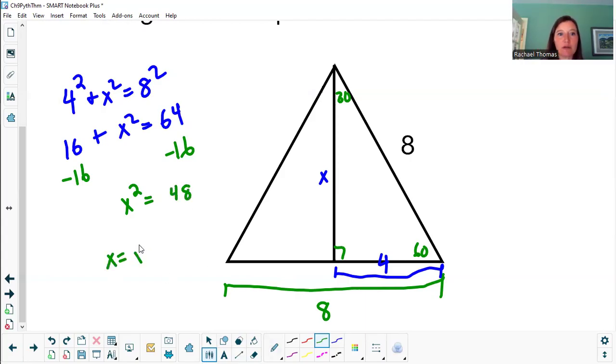Do a little subtraction here. So x will equal square root of 48, which again, I am not going to type in my calculator for a decimal. I'm going to simplify it. 48 is 16 times 3. The square root of 16 is 4. 4 root 3, or 4 times the square root of 3.